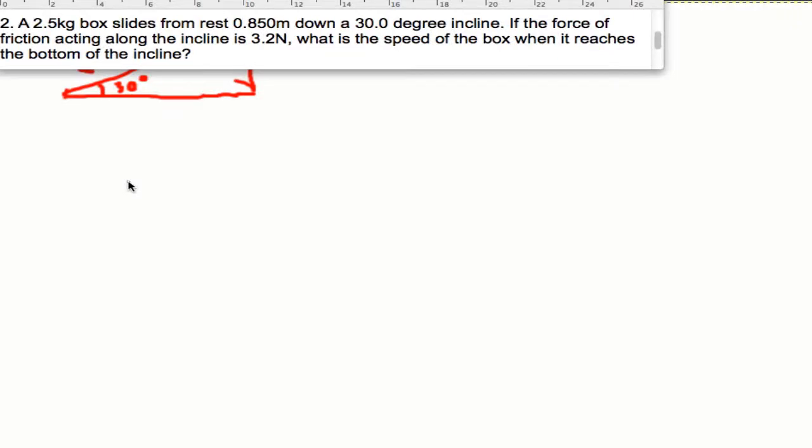A 2.5 kg box slides from rest 0.85 meters down a 30 degree incline. If the force of friction acting on the incline is 3.2 N, what is the speed of the box when it reaches the bottom of the incline?